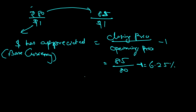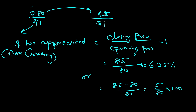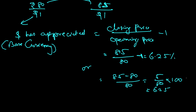I can also calculate this as: 85 minus 80, divided by 80, which is 5 divided by 80, multiplied by 100 — that also gives me 6.25 percent. So dollar has appreciated by 6.25 percent.